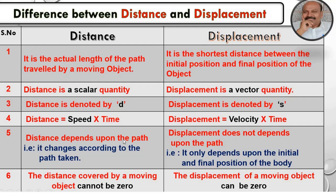Distance depends upon the path, that is it changes according to the path taken. Displacement does not depend upon the path, that is it only depends upon the initial and final position of the body. The distance covered by a moving object cannot be zero. The displacement of a moving object can be zero.